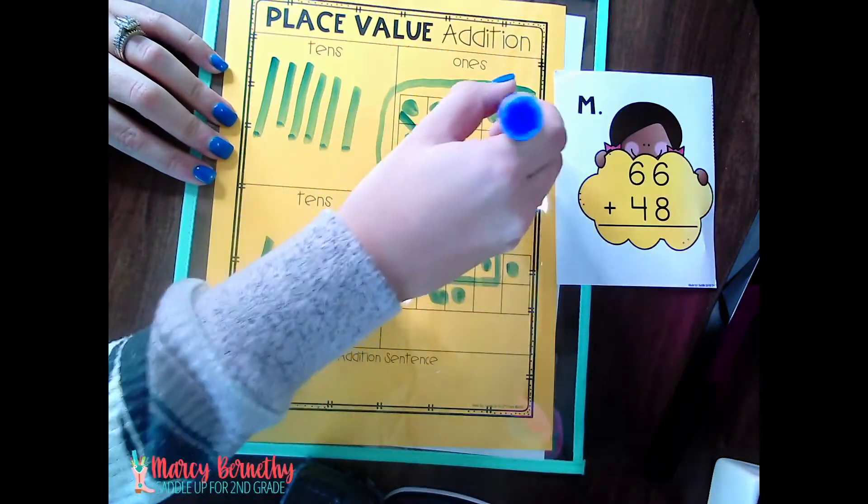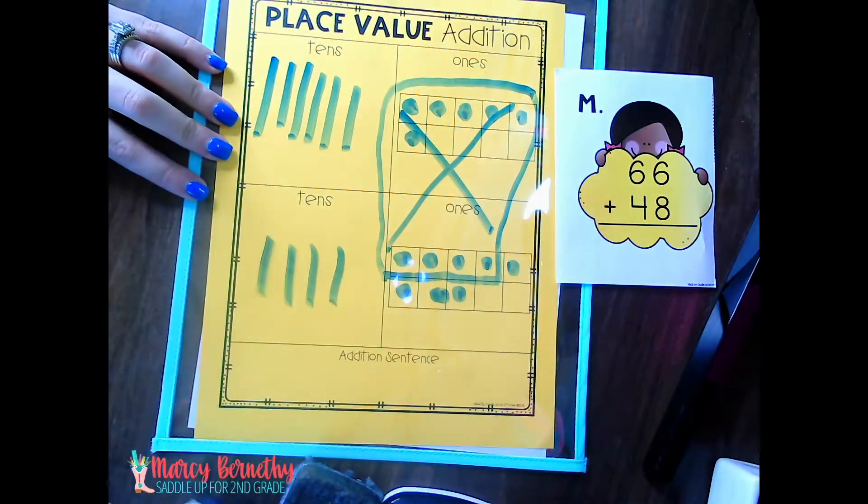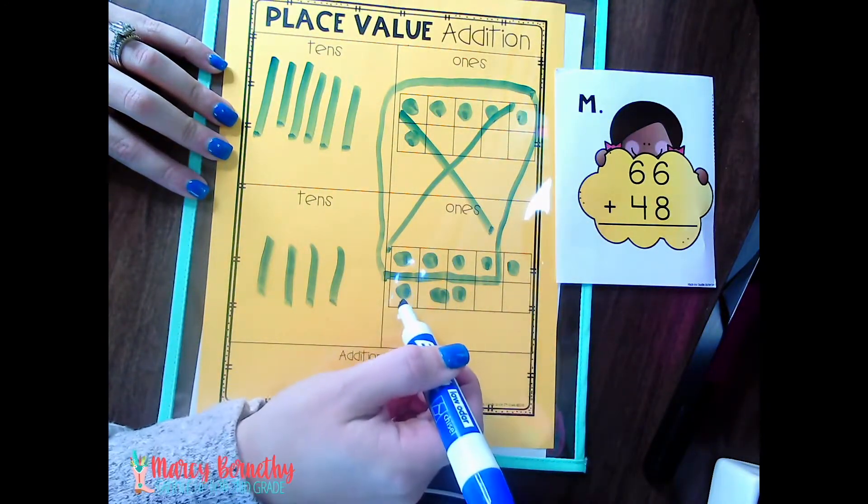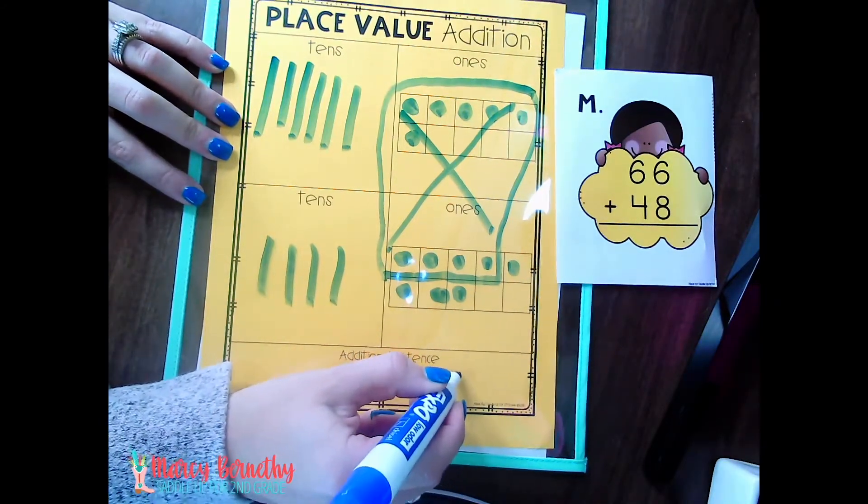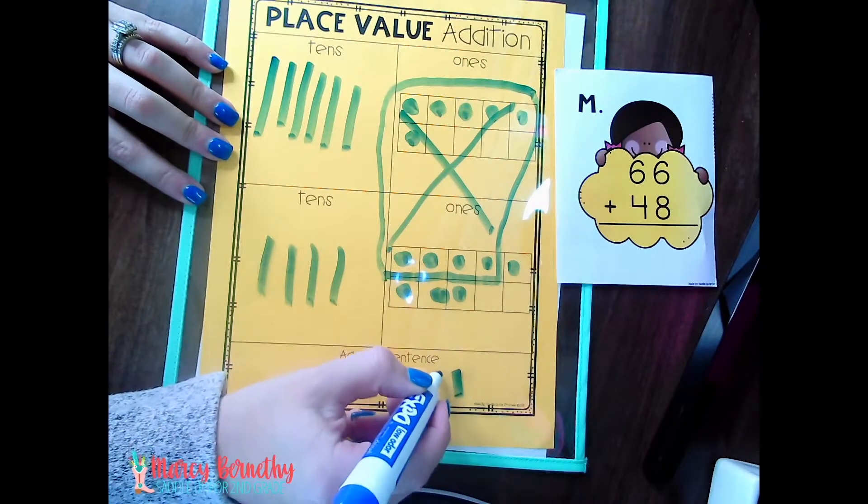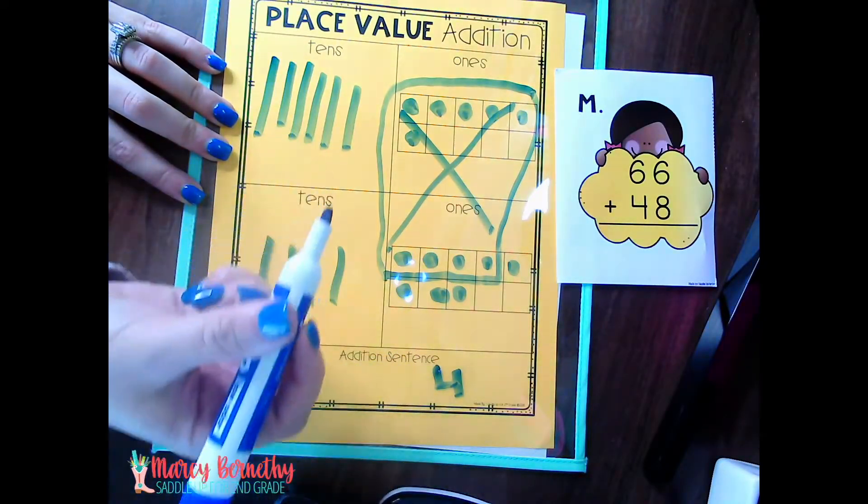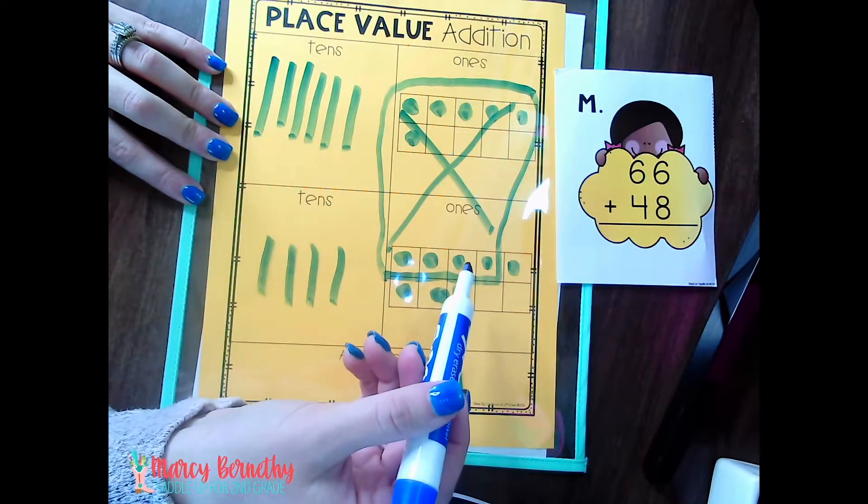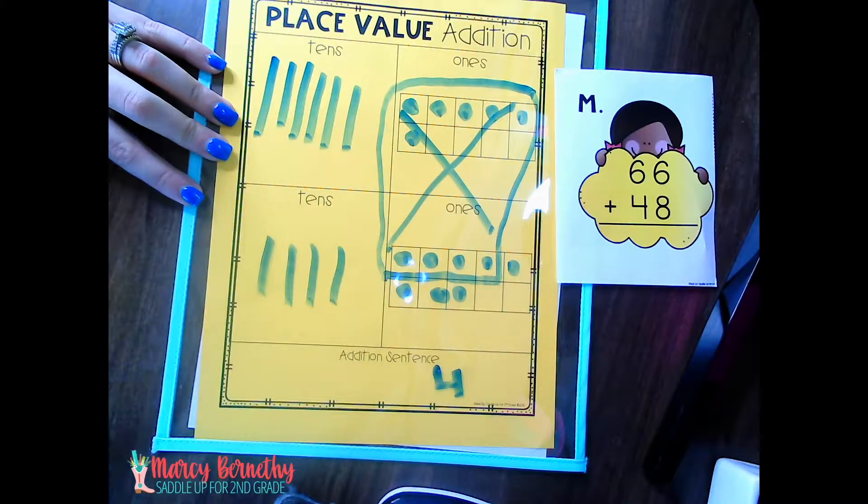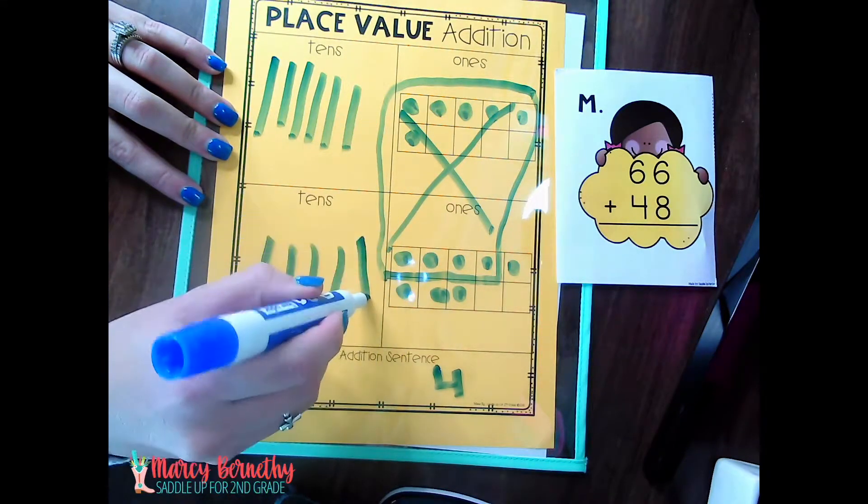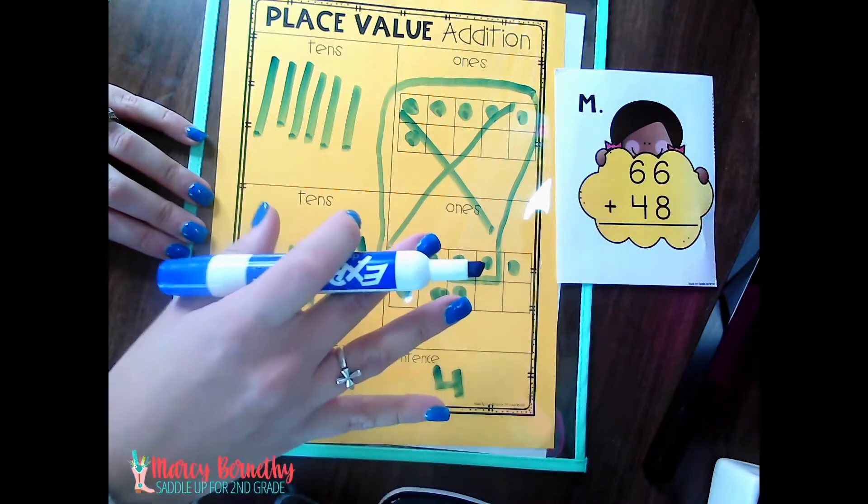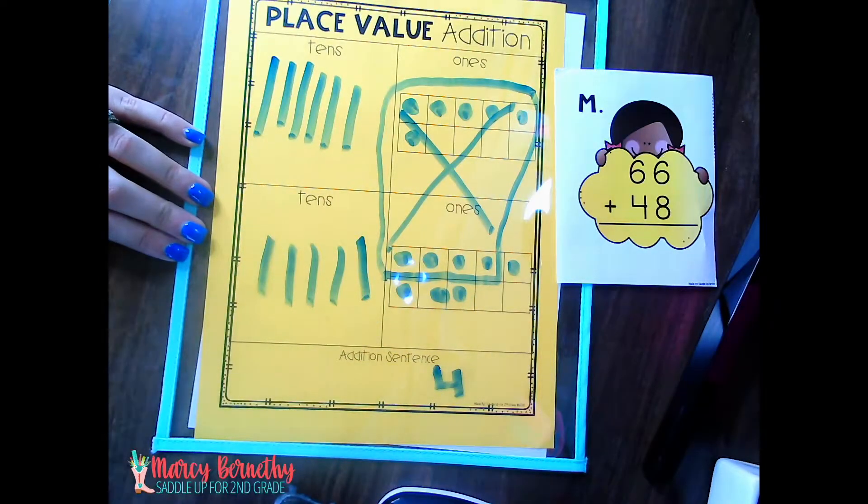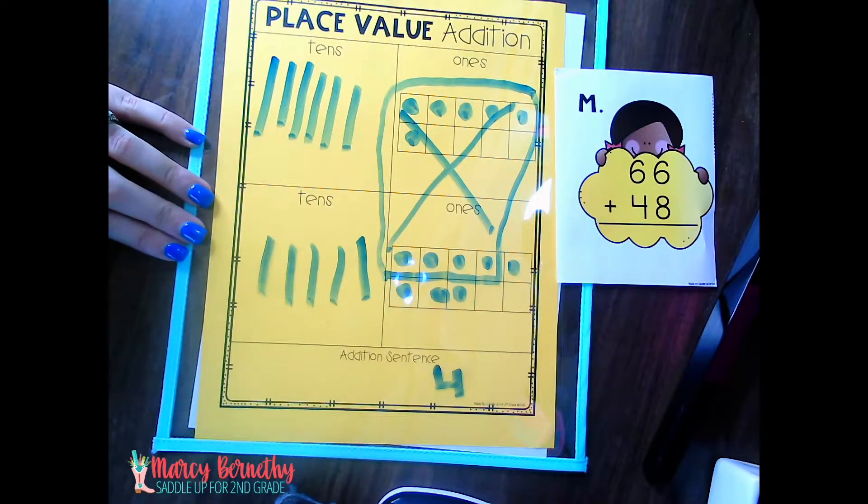So these are what they are going to regroup. They're going to circle it. I would have them mark those out. And now we have four ones left. One, two, three, four. They need to know that because they took those 10 ones away, they need to replace it with a tens block. So it doesn't matter where they put it. So they regrouped. They traded 10 ones for a tens block. Now they can count the tens to solve for the sum.